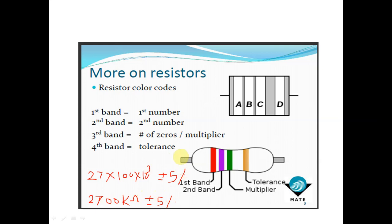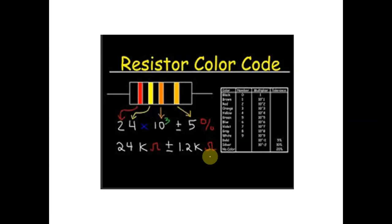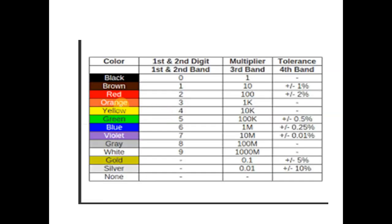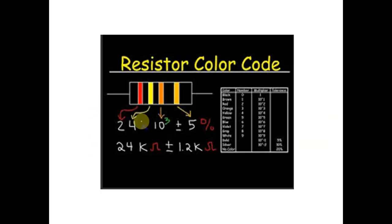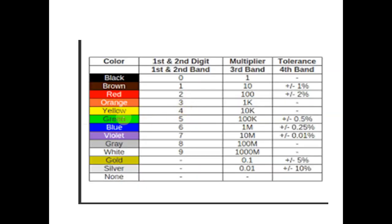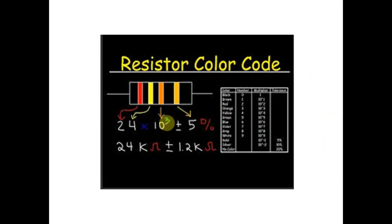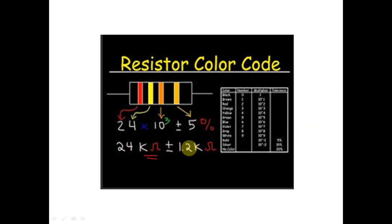Example 2: Red-Yellow-Orange-Gold. First digit: Red=2, Second digit: Yellow=4, Multiplier: Orange=1k (10³), Tolerance: Gold=±5%. Value = 24 × 10³ = 24 kilo-Ohm ±5% tolerance.